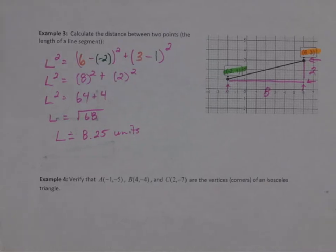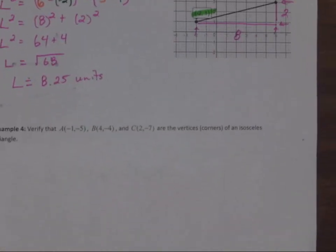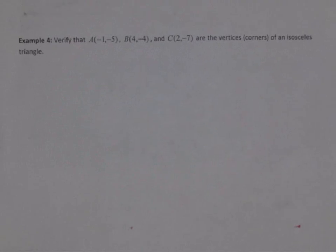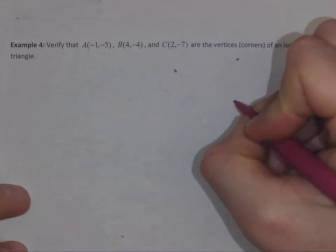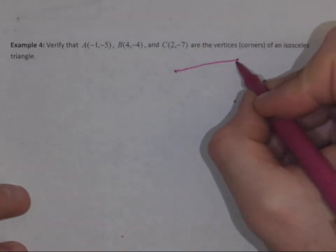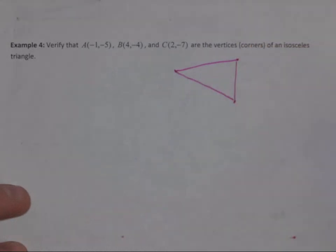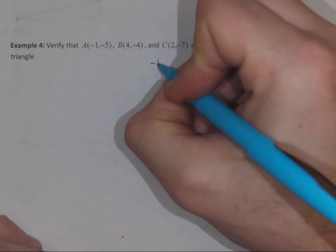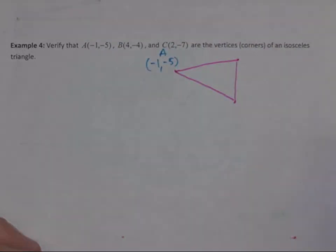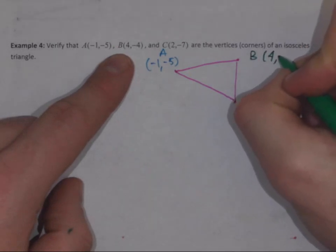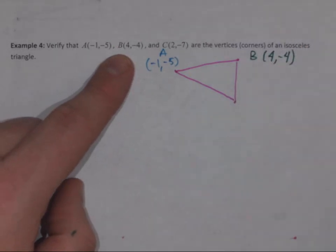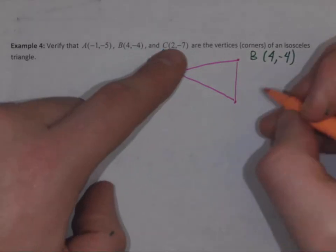If we continue with example 4, we now have three vertices, three corners of a triangle. A sketch for my help. Here's vertices A, here's vertices B or corner B, and corner C.